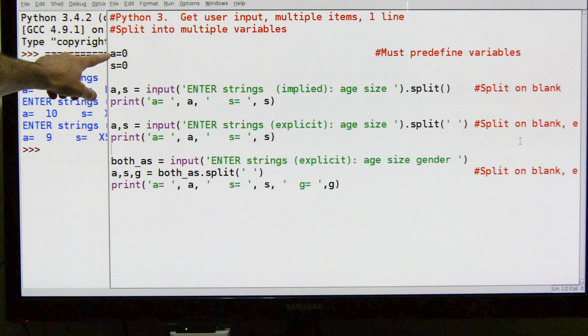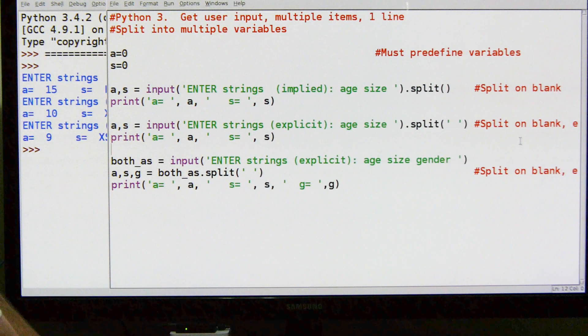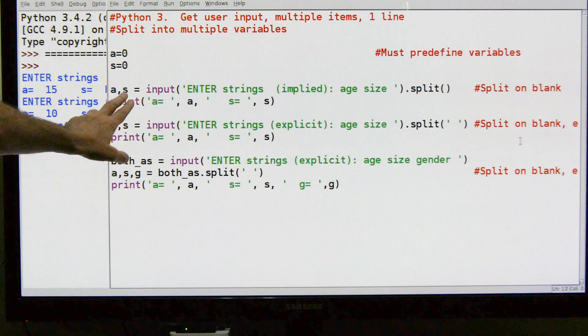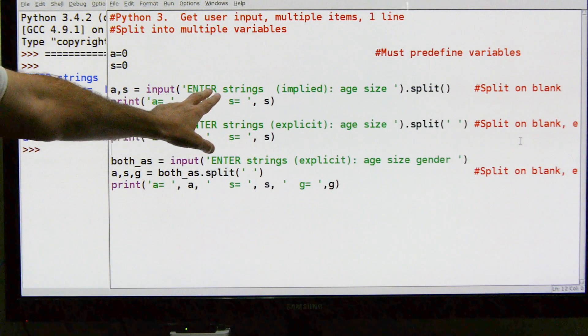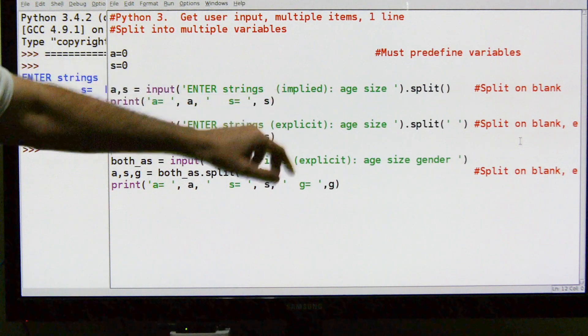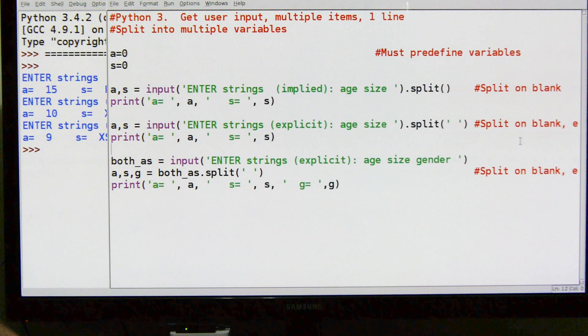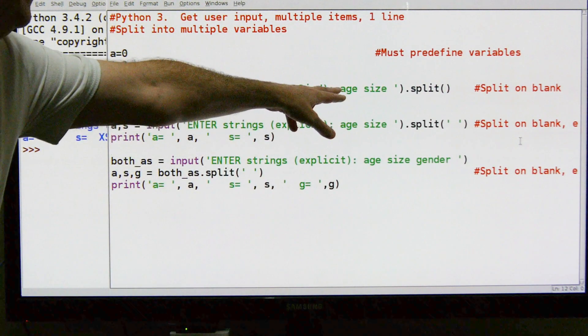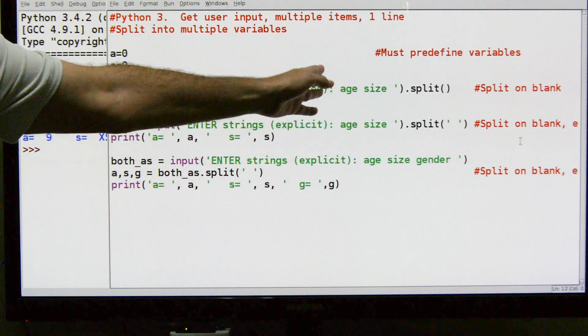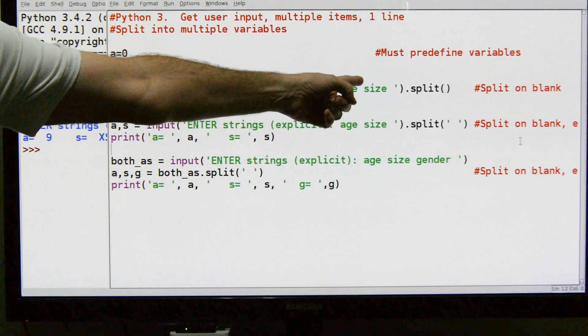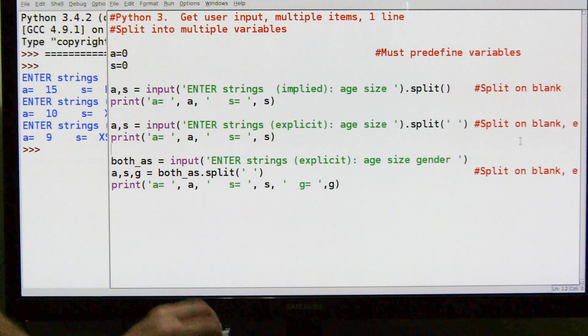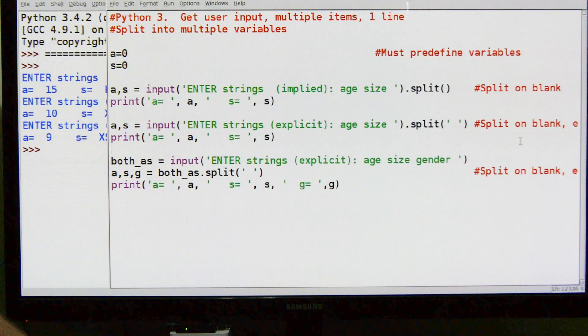We're going to ask for input from the user - enter strings and do an implied split on space. So somebody's going to enter the age and the size with a space in between, and that split will assume the default is split on space.